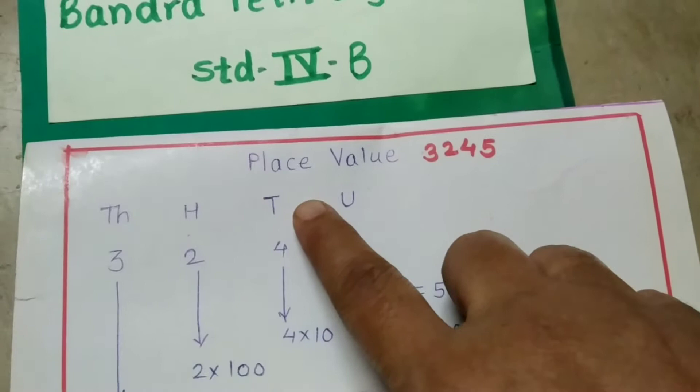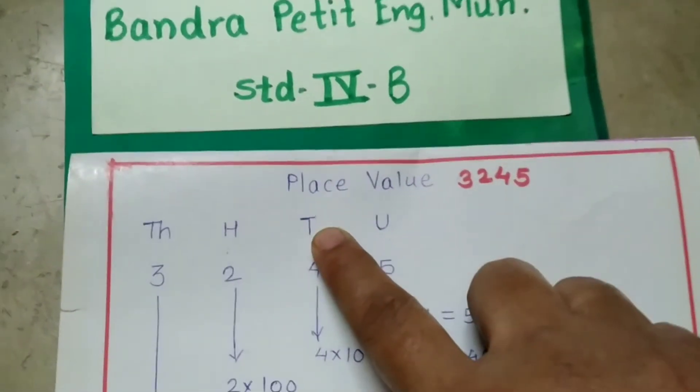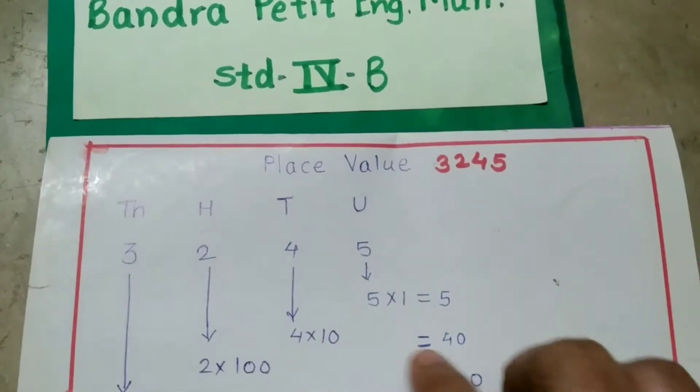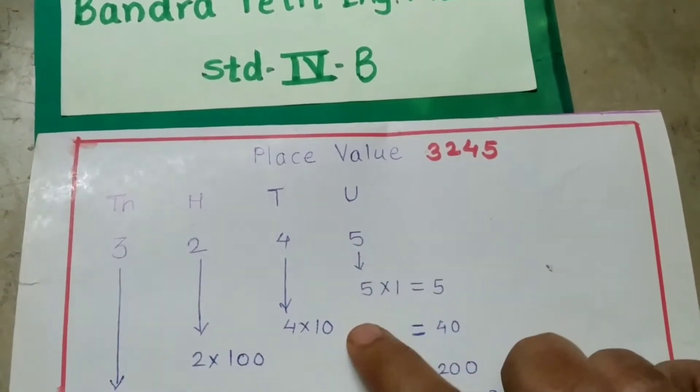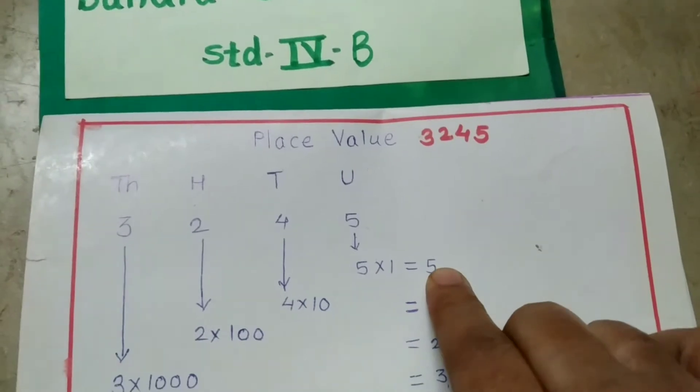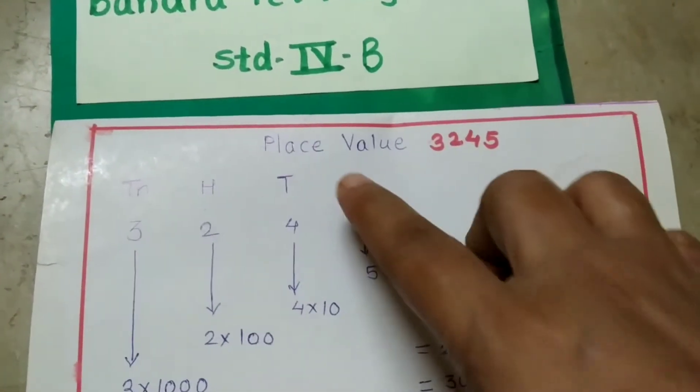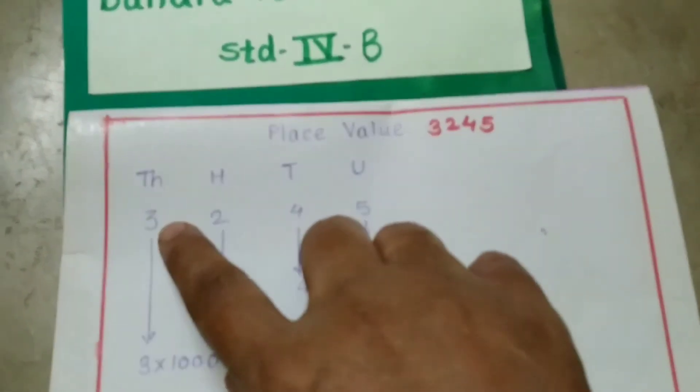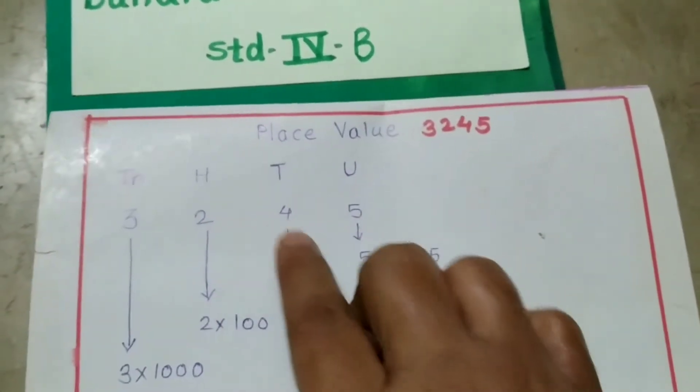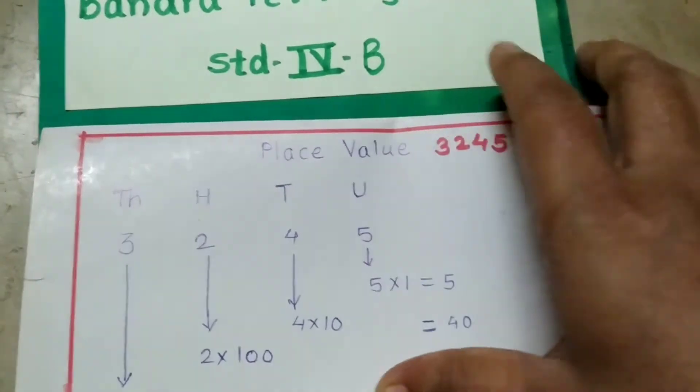And 4 is in 10 place, so 4 into 10 is equal to 40. And 5 is in unit place, so 5 and 5. The place value of these numbers are 3000, 200, 40, and 5.